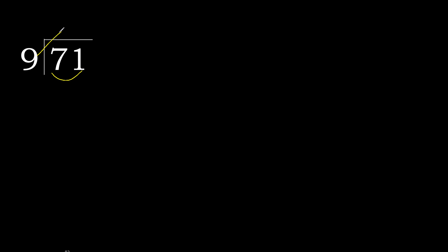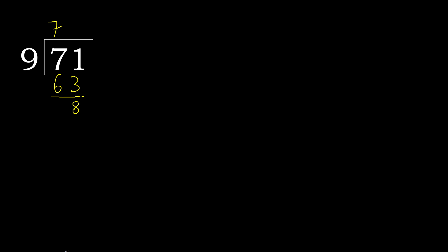9 multiplied by 8 is 72, which is greater. Multiply by 7: 63, which is not greater. Subtract 8. Next — there is no next number, therefore complete.